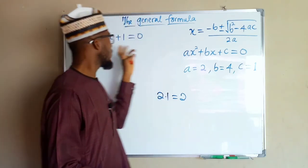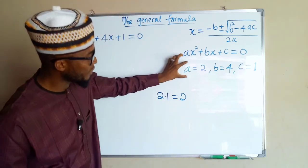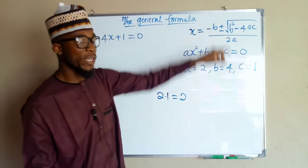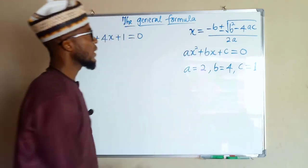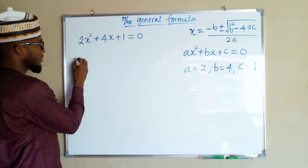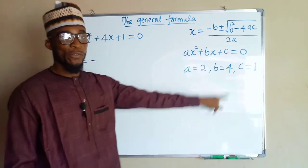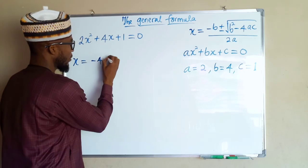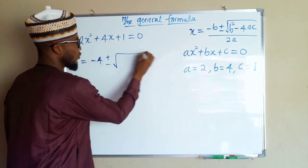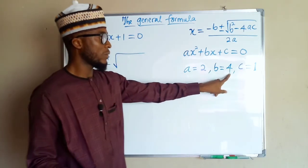So what we are going to do in order to solve this quadratic equation is substitute this data into this formula. We have x equal to minus b, and b is 4, plus or minus. In the square root, we have b squared, which is 4 squared.